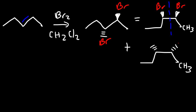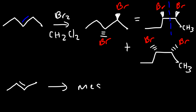So whenever you have a cis-alkene and react it with Br2, you're going to get a pair of enantiomers. If you have a trans-alkene, it depends on whether there's symmetry or not. If the trans-alkene is symmetrical, you're going to get meso compounds. If the trans-alkene lacks symmetry, you're going to get a pair of enantiomers.